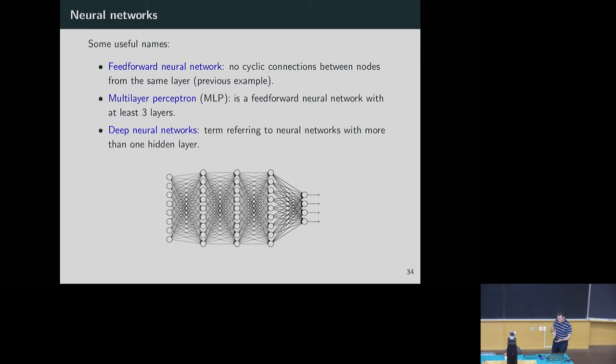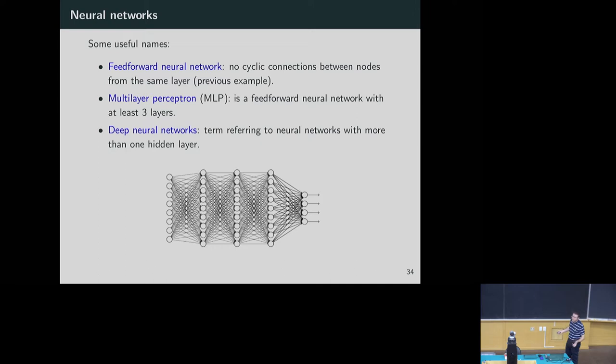By doing that, you can build several systems with different names. A feed-forward neural network connects layers with layers. We have a multi-layer perceptron if there are at least three layers. Finally, you have deep neural networks if the number of layers is high — for example, three hidden layers and two external layers with a lot of weights. Each line represents a weight to be tuned by the optimization problem.